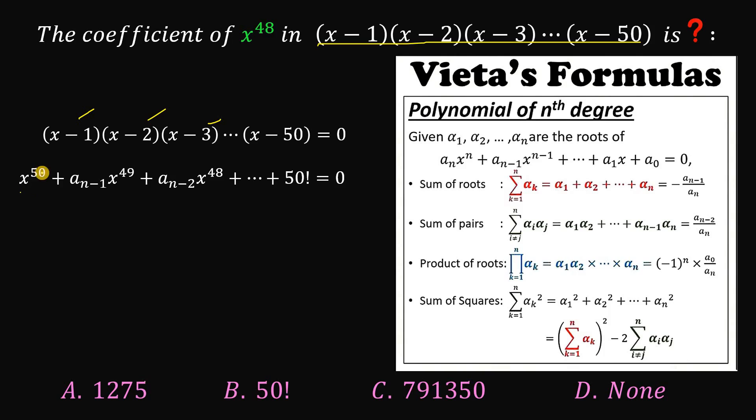So we have here x raised to the power of 50 plus A sub n minus 1. By the way, A sub n here is just 1. This is a monic polynomial.